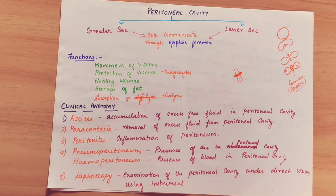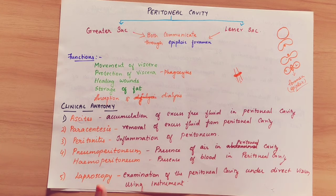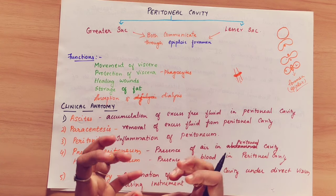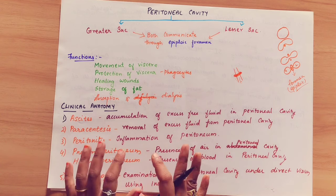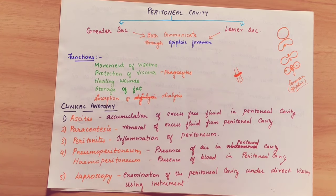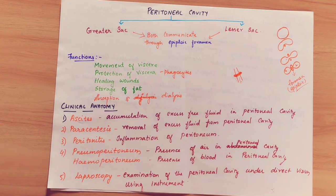Coming to the functions of the peritoneum. The first chief function is providing a slippery surface for the viscera. It protects the viscera from infection and prevents friction, allowing free movement of the abdominal organs.